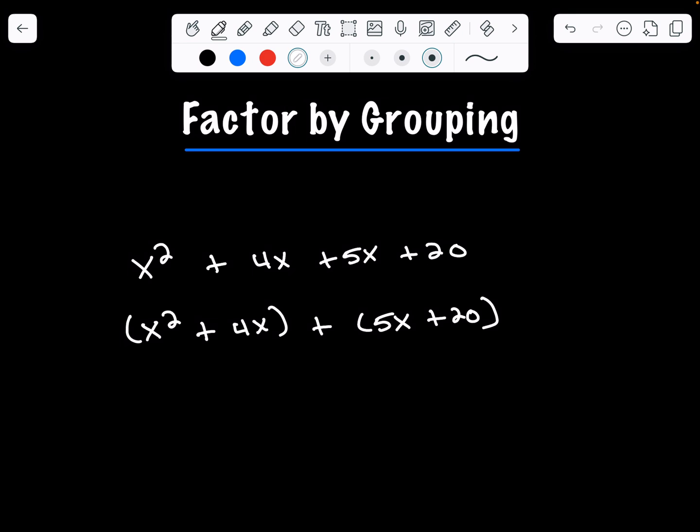Step two is in each pair we're going to factor out the greatest common factor. Let's start with pair number one. Our greatest common factor for this is x. x is the greatest factor that goes into both of these evenly. So x goes into x² x times plus 4.